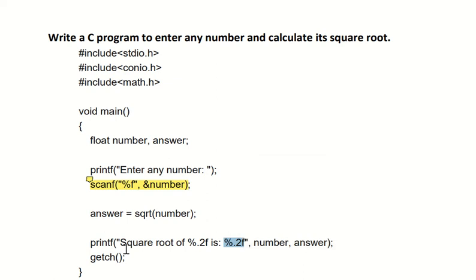It will print 'square root of 196 is: 14'. It will not print just 14 and 196, but 196.00 and 14.00 because of the .2, which means two decimal points. Then we have getch and close the bracket.